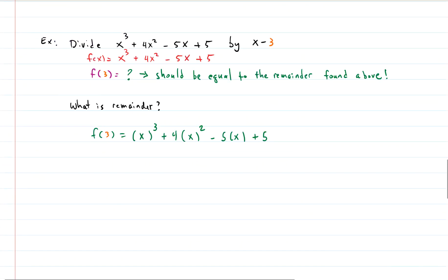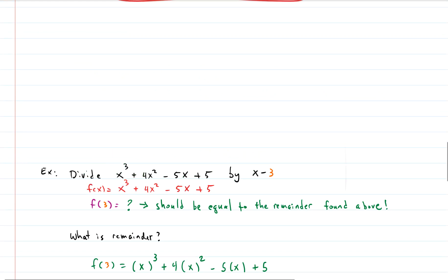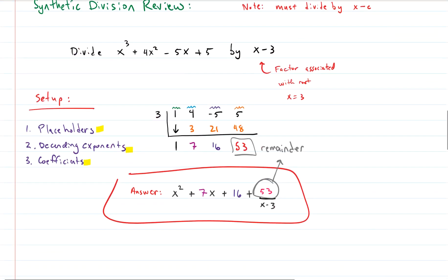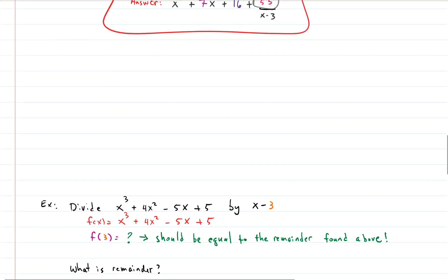Here's our problem. Exact same thing, right? Divide this long polynomial which is x cubed plus 4x squared minus 5x plus 5 by x minus 3. Same thing I just did up here doing synthetic division, right? Same problem.